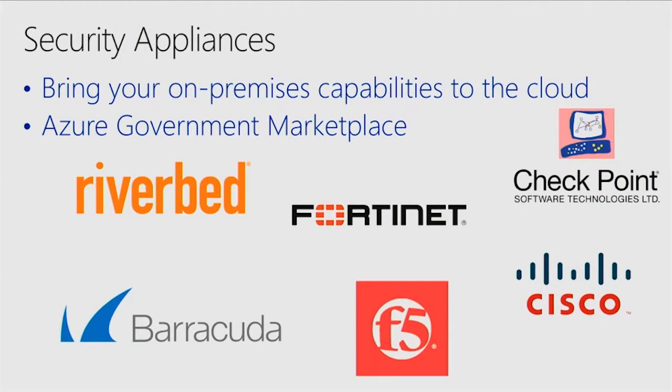Beyond NSGs, we have security appliances — firewalls on steroids. Government agencies commonly use things like Cisco or Barracuda. By combining NSGs, which wall off traffic and force routes, with virtual network appliances, instead of buying a physical box and wiring it all up, you can build those building blocks virtually. Azure handles all the routing and mixing of traffic, giving you familiar compliance-friendly controls in a virtualized manner that is more flexible and scalable.